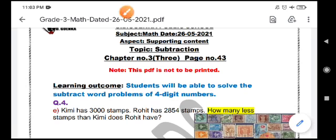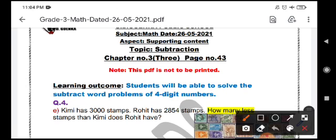First we are going to read E part. What is the question? Read it very properly, very carefully. Kimi has 3000 stamps. Rohit has 2854 stamps. How many less stamps does Rohit have than Kimi? How many less is a keyword for subtraction.